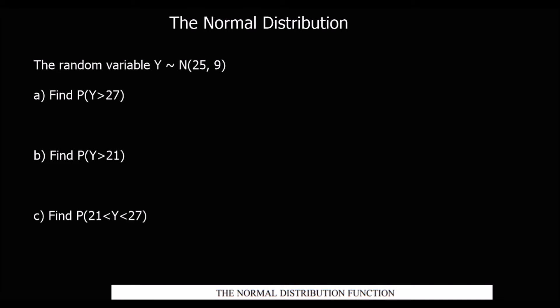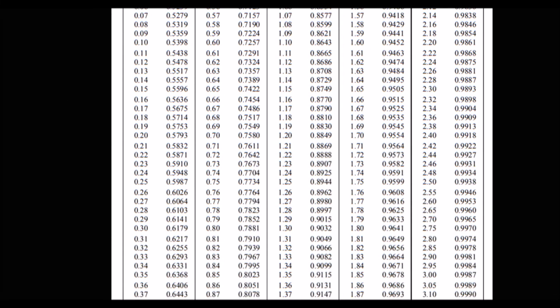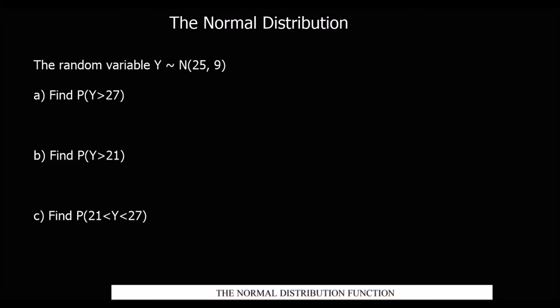Here's another question. The random variable y is normally distributed with a mean of 25 and a variance of 9, which means the standard deviation is 3, because standard deviation is the square root of the variance. For part a, find the probability that y is bigger than 27.